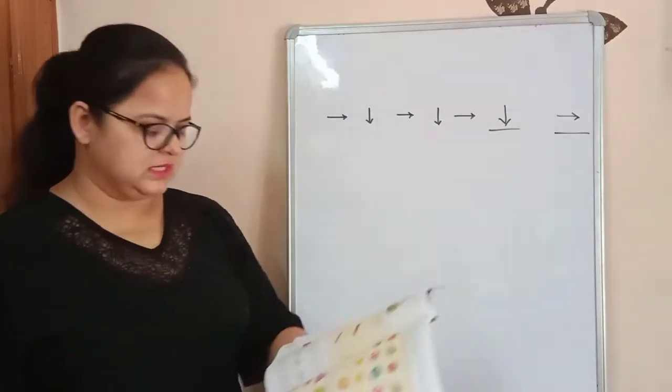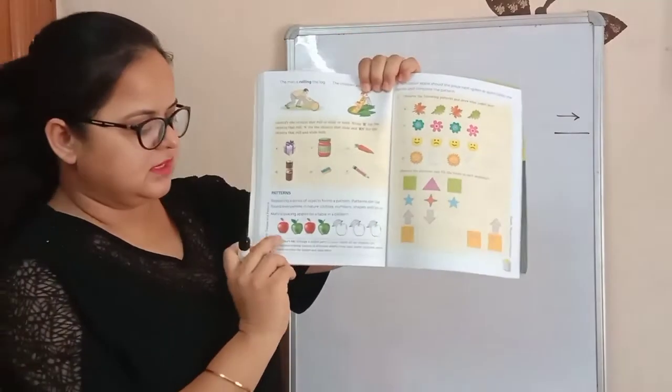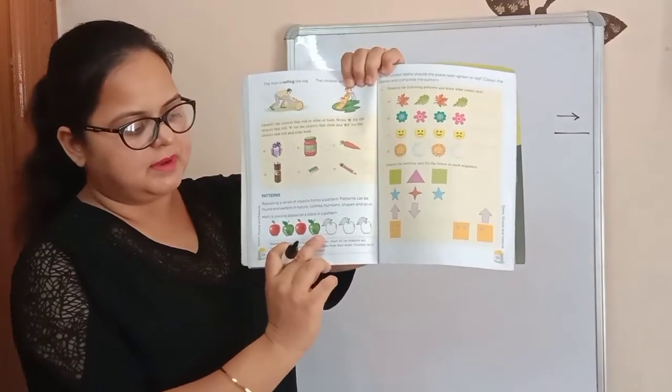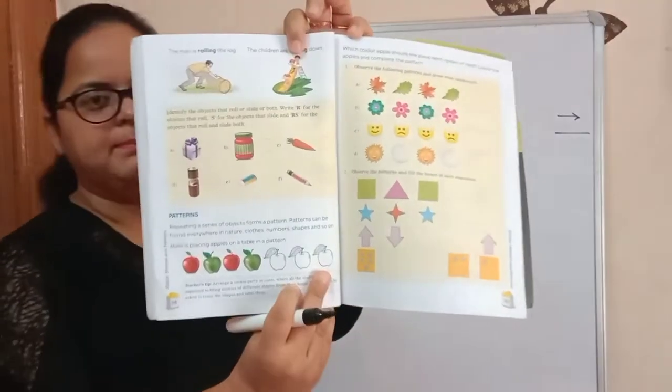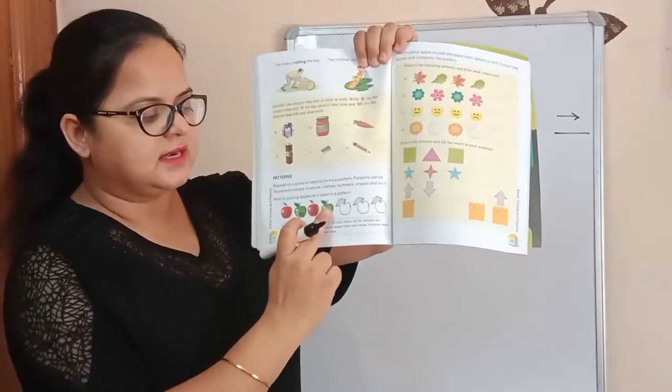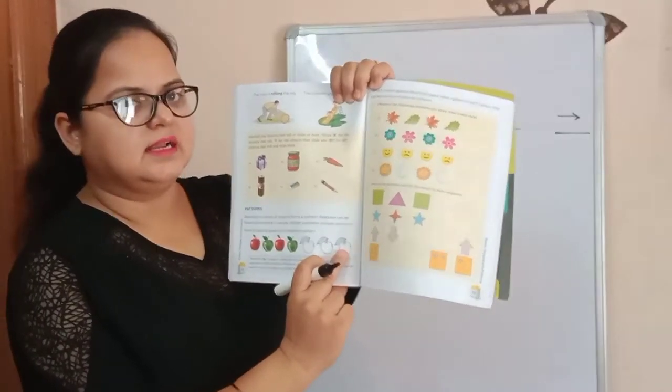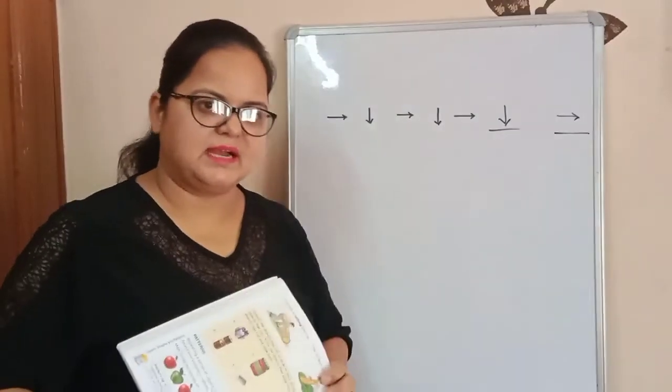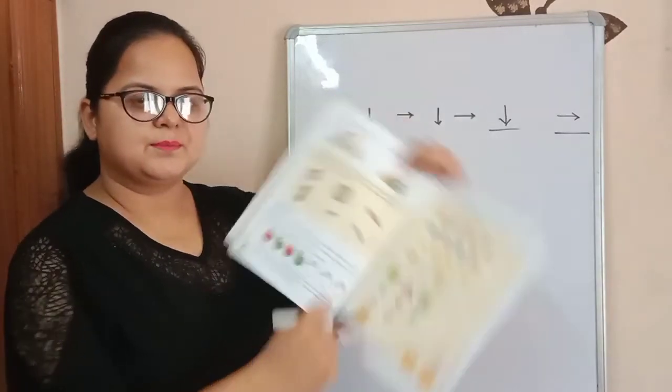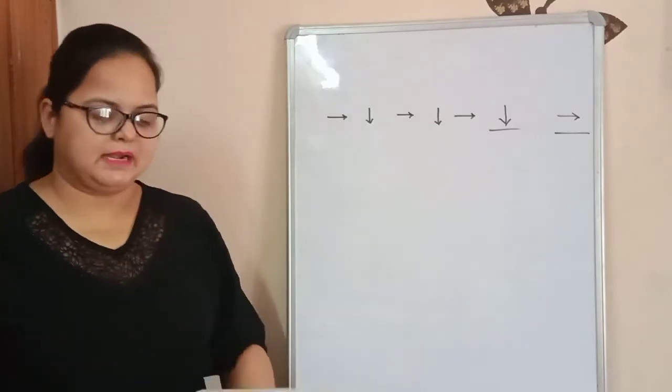I hope you all understand. See in this book. Here is an example given. Red apple, green apple, red apple, green apple, then these are blank. Here you have to fill the color. Red, green, red, green. Here you will fill red color, green color, and then red color again. Red, green, red, green, red, green, red. This is called pattern.